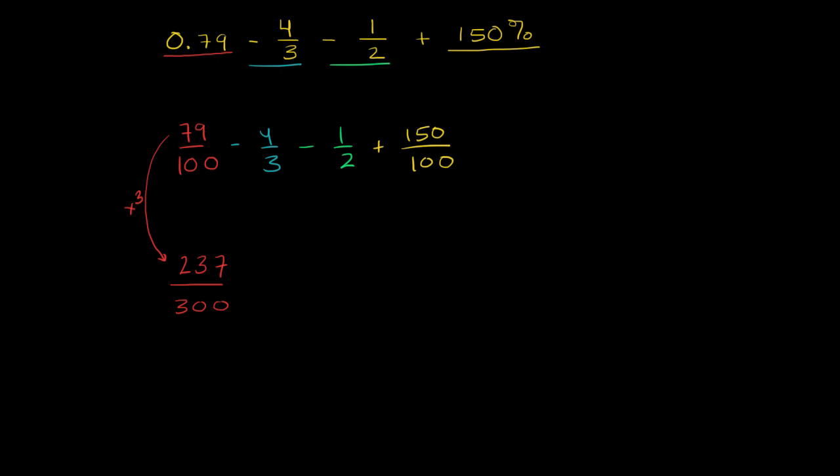Now, 4 thirds. Well, to get the denominator to be 300, we have to multiply the denominator by 100. So we have to multiply the numerator by 100 as well.